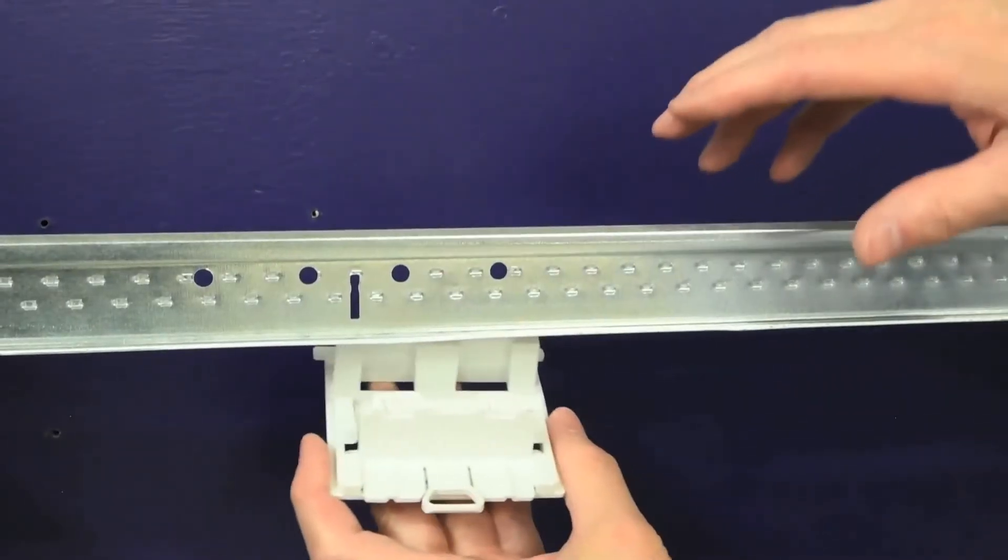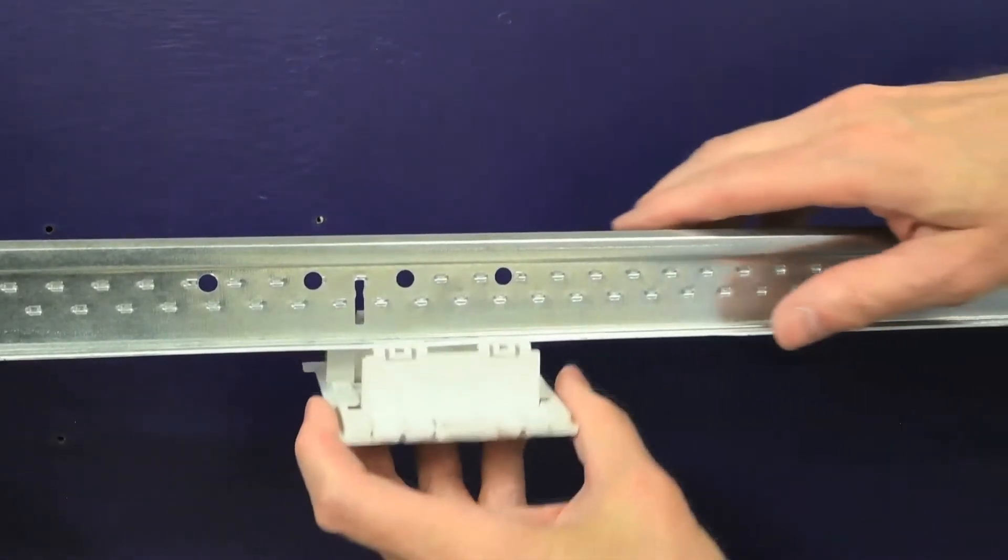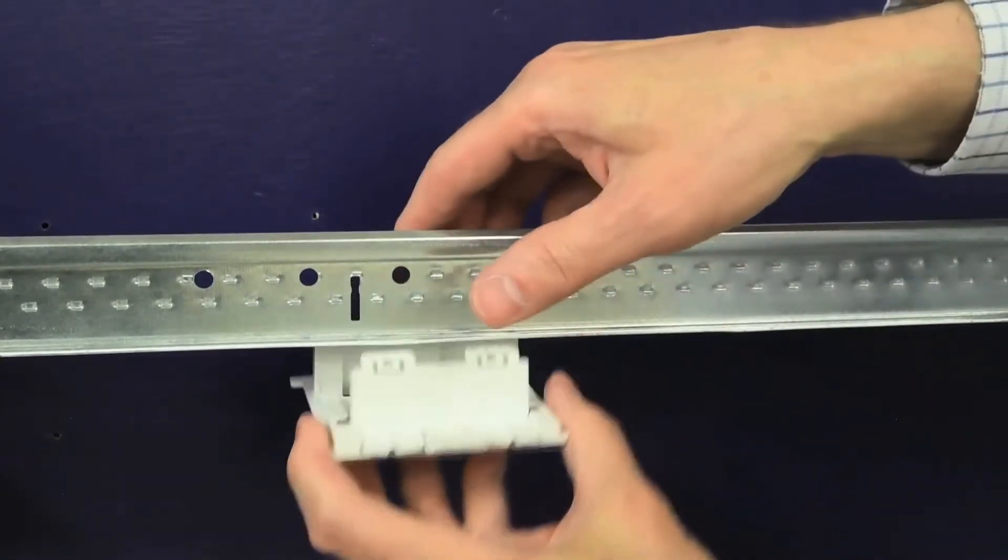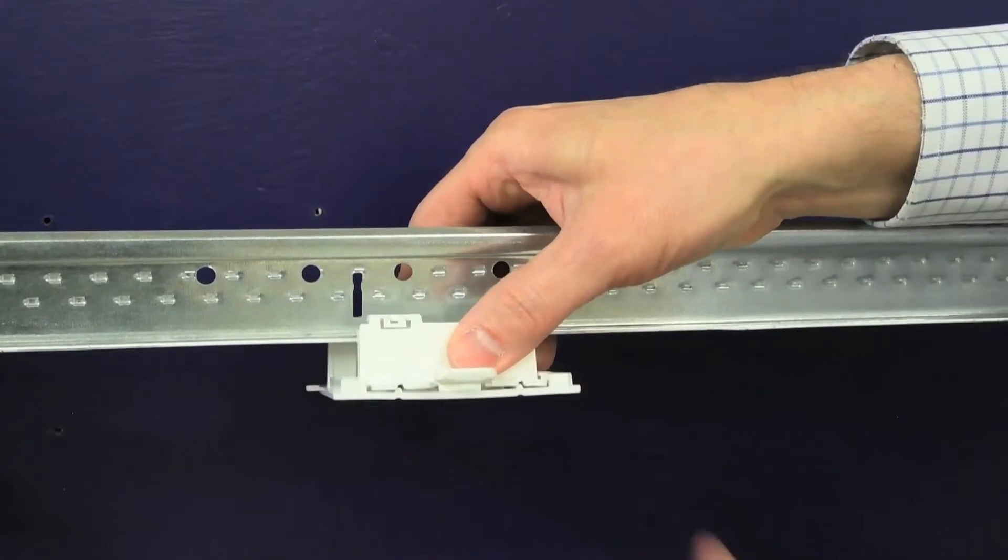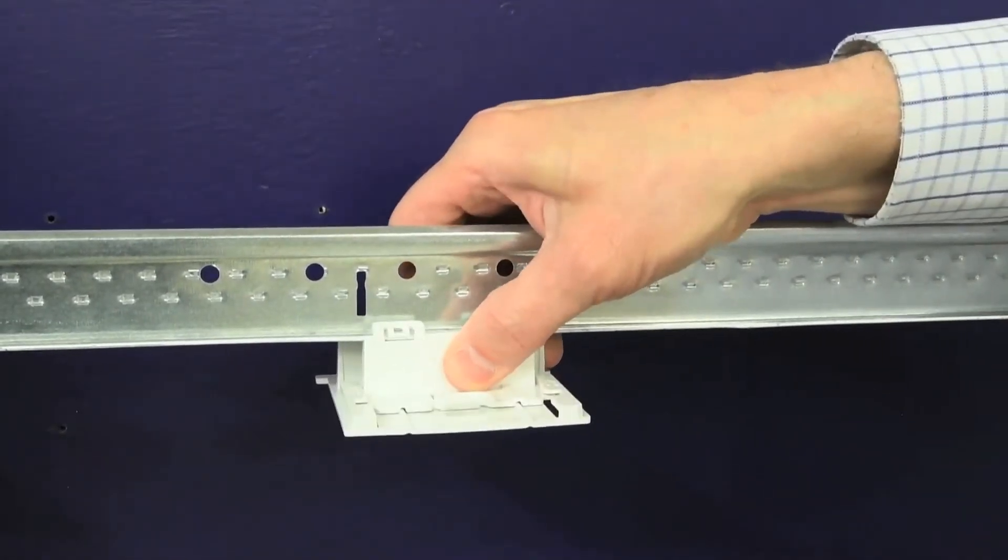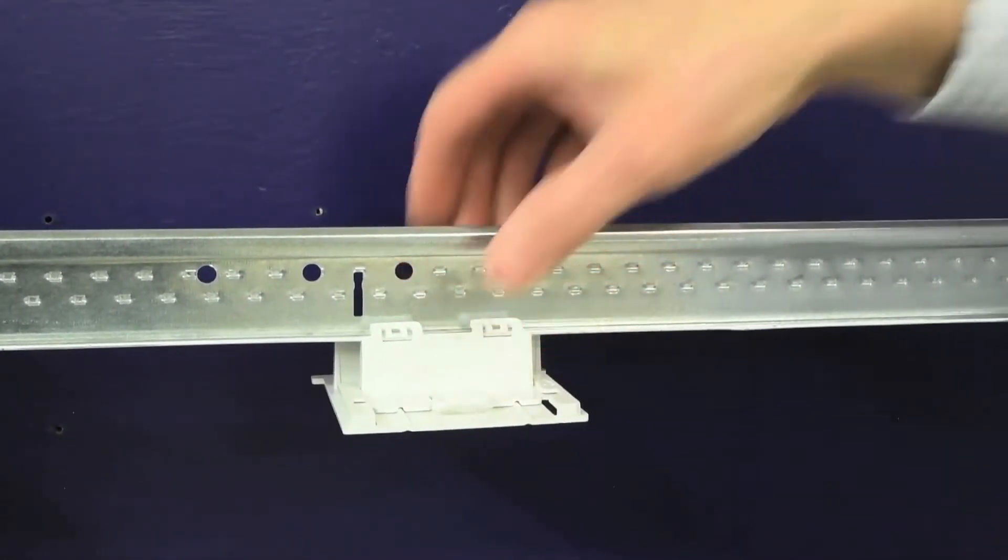The bracket stationary end is hooked onto a t-bar rail and using your other hand the movable part of the bracket is squeezed together until it holds both sides of the t-bar and locks as indicated by the clicking sound.